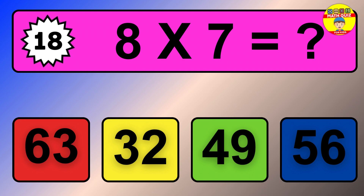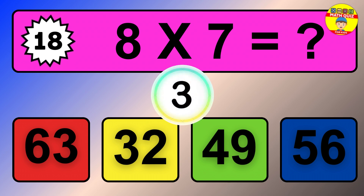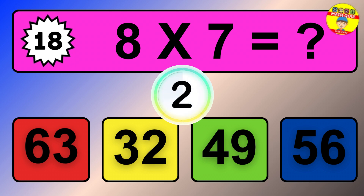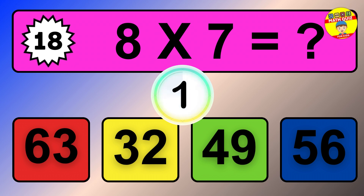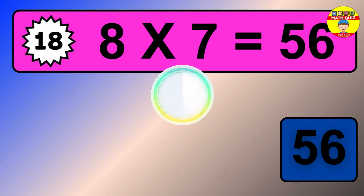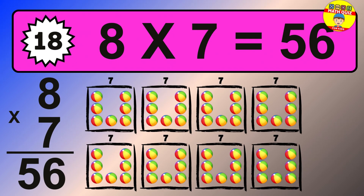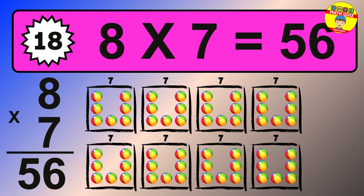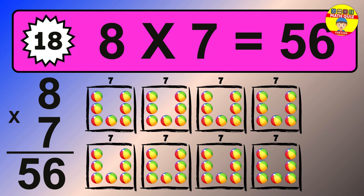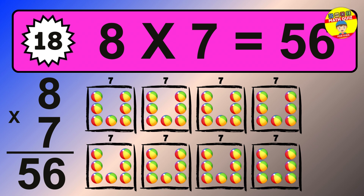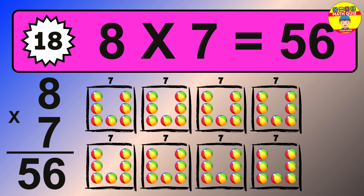Question 18. 8 times 7 equals what? The answer is 8 times 7 is 56. To calculate, we have 8 groups with 7 balls each one. So how many balls do we have? 56 balls.